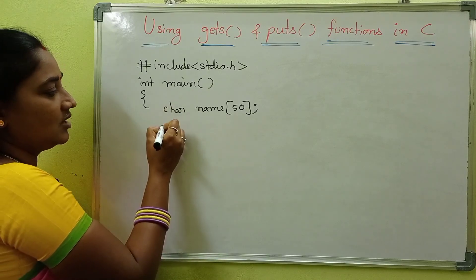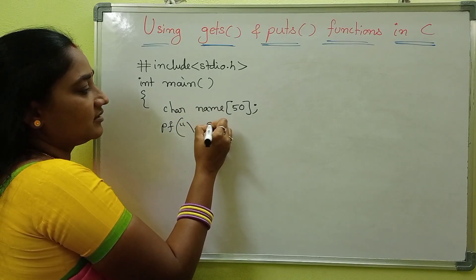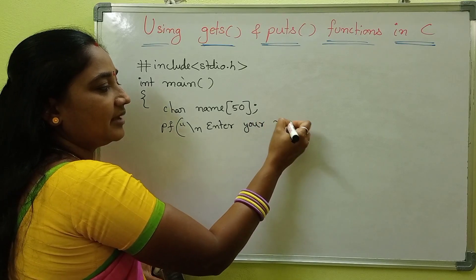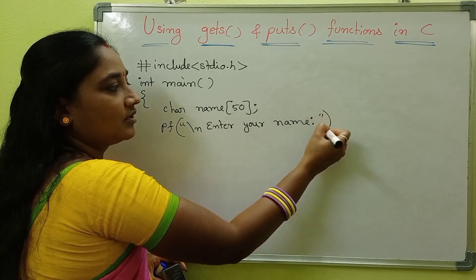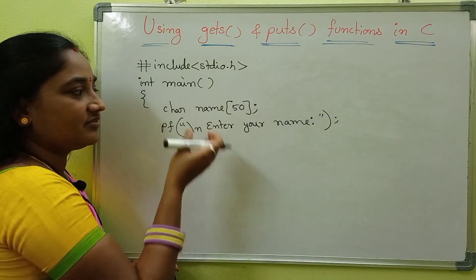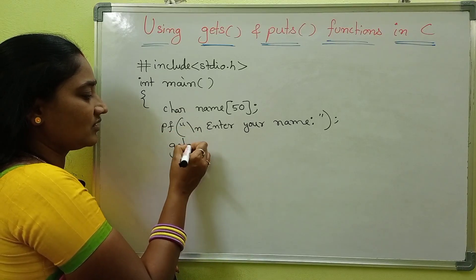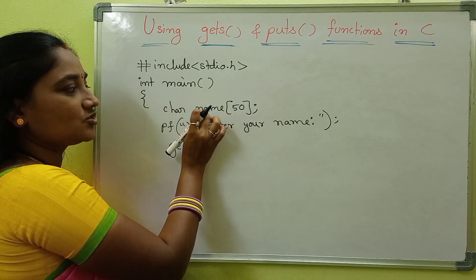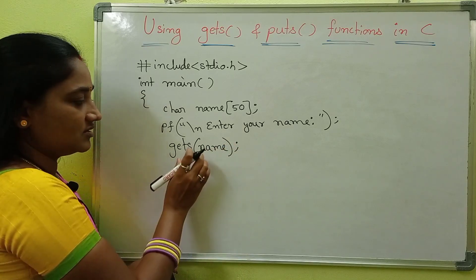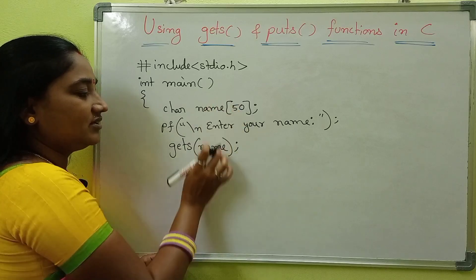We write printf with a newline — "Enter your name". After that, to read the string value, I am going to use gets. Gets of the variable name — gets(name). There is no need to use a format specifier. Gets stores the input directly into the variable name.